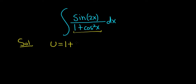So u is 1 plus, and I'm going to write it like this, cosine x quantity squared. Same thing as cosine squared. I just did that to make it a little more clear.